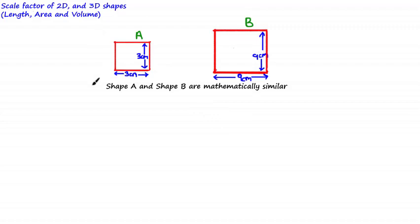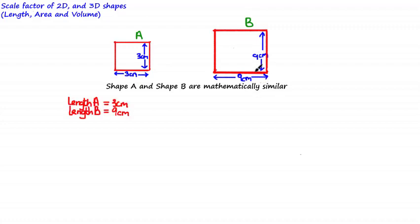Here we have two squares: shape A is 3×3cm and shape B is 9×9cm. We're told both shapes are mathematically similar, which means by comparing corresponding sides we can find a scale factor of length. The length of A is 3cm and the length of B is 9cm, so we divide 9 by 3 to get a scale factor of length equal to 3.